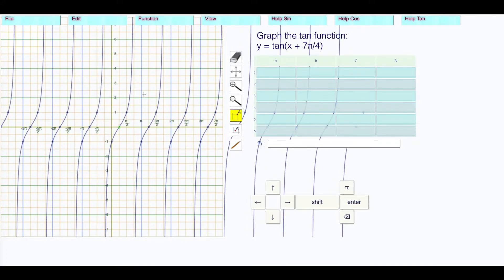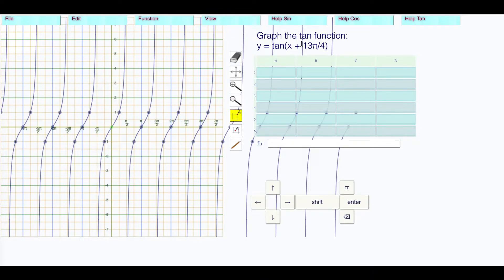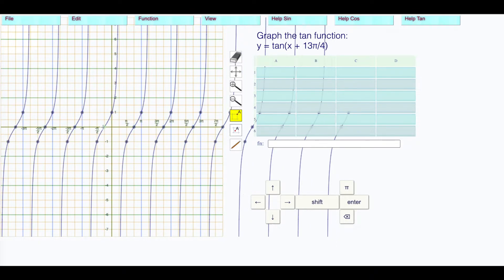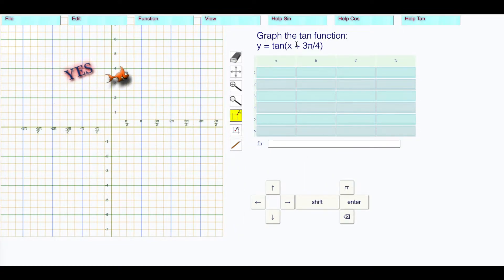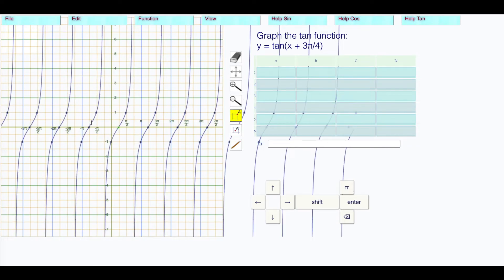Tangent of x plus 13π/4. The h is negative 13π/4. 12π/4 is 3π, so 13π/4 is right here. It's as though I just translated this back one. Doesn't matter whether it's this point or that point. Plus 3π/4, so my h is really negative 3π/4. I just want to make sure that one of these zeros is going through 3π/4. Here's 4π/4, so there's 3π/4.